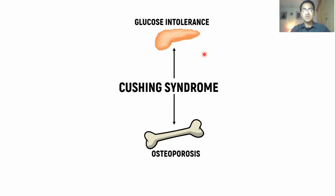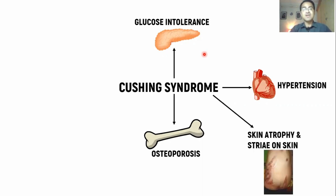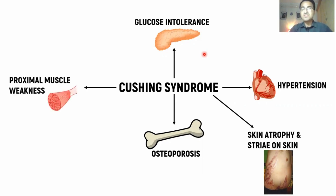Cortisol causes insulin resistance resulting in glucose intolerance. It causes hypertension because whenever cortisol is in excess it stimulates aldosterone receptors and causes salt and water retention resulting in hypertension. It causes skin atrophy and striae formation on skin because it interferes with collagen synthesis, resulting in slow wound healing.